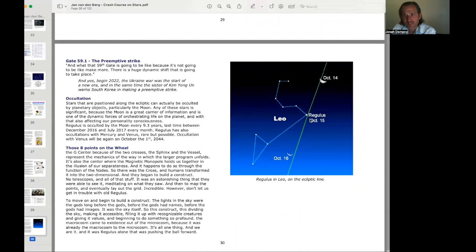Here we have a picture of Regulus and Leo on the ecliptic line. Occultation, which means when a star or planet goes in front of another. Stars that are positioned along the ecliptic can actually be occulted by planetary objects, particularly the moon. Any of these stars is significant because the moon is a great carrier of information. It is one of the dynamic forces of orchestrating life on the planet. And with that also affecting our personality consciousness. Regulus is occulted by the moon every 9.3 years. Occultation with Venus will occur on October 1st, 2044.